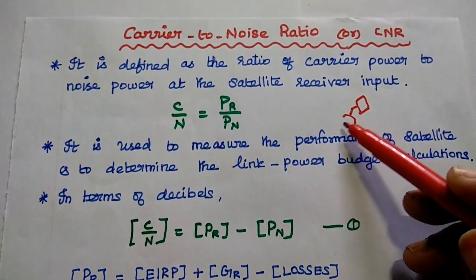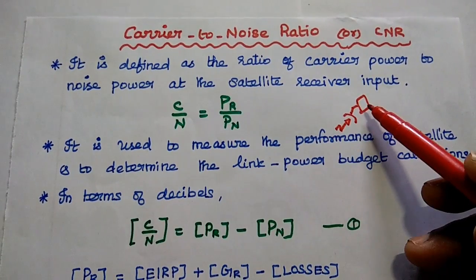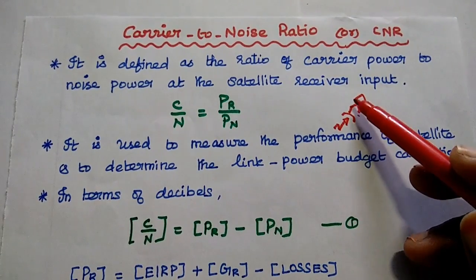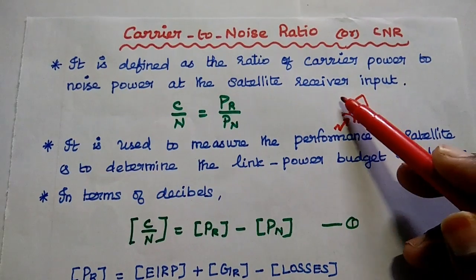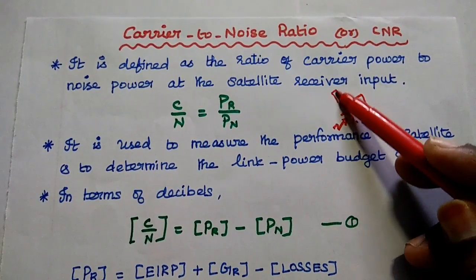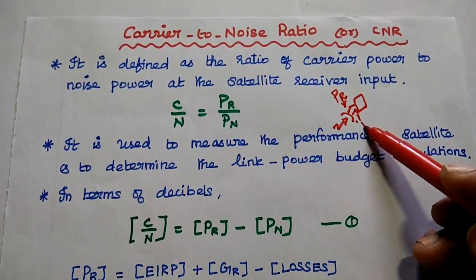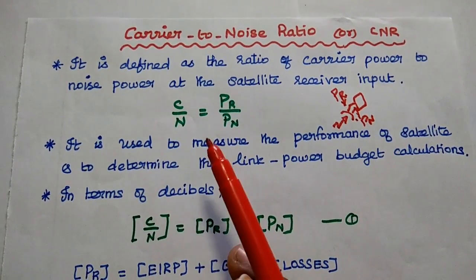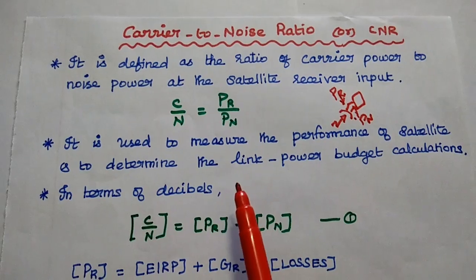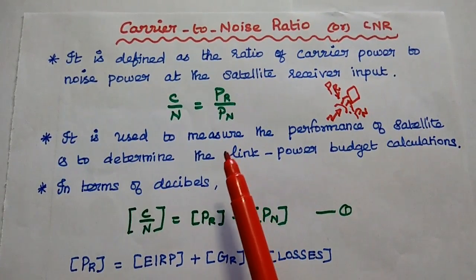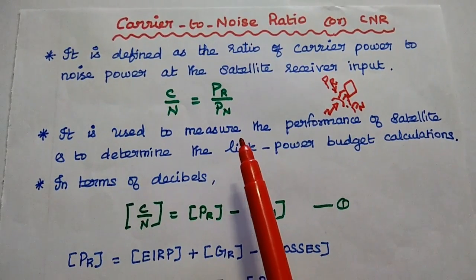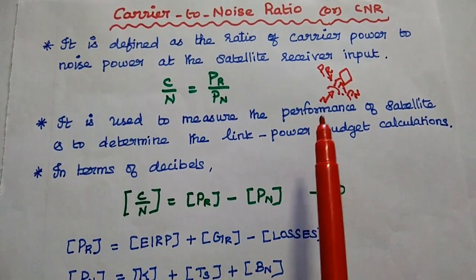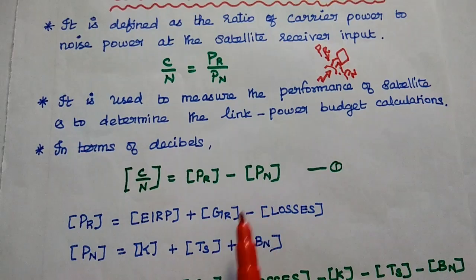There is a satellite. We are going to transmit the signal from earth station to the satellite. Whenever the signal is received at the satellite receiver site, we can consider it as having two important signals — one is the received signal along with its noise signal. We can take the ratio carrier power to noise power as C/N = PR/PN. This carrier to noise ratio is mainly used to measure the performance of the satellite link and also to determine the link power budget calculations.